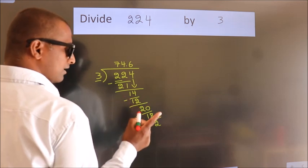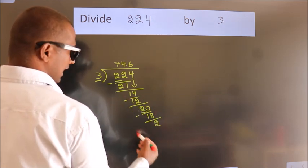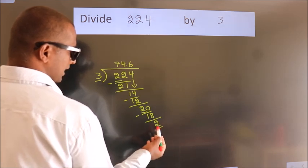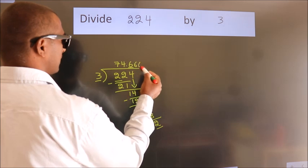Now you observe. We had 2 here, and we got 2 again. That means this number keeps on repeating.